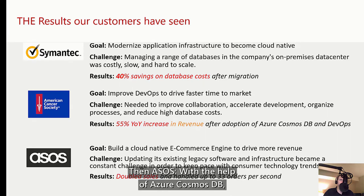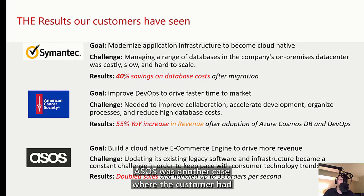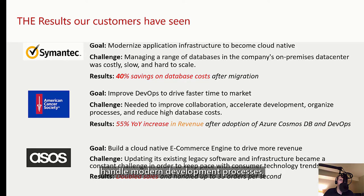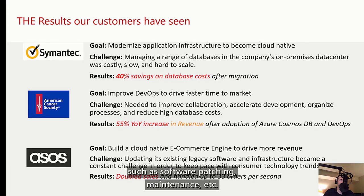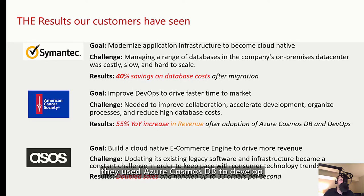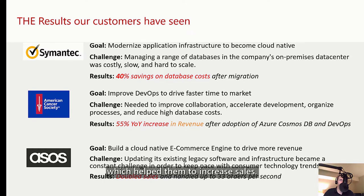Then ASOS. With the help of Azure Cosmos DB, ASOS doubled their sales during Black Friday. ASOS had an on-premise installation that couldn't handle modern development processes such as software patching and maintenance. After migrating their processes to Azure, they used Azure Cosmos DB to develop an automated recommendation system using the Azure Cosmos DB Graph API, which helped them increase sales.